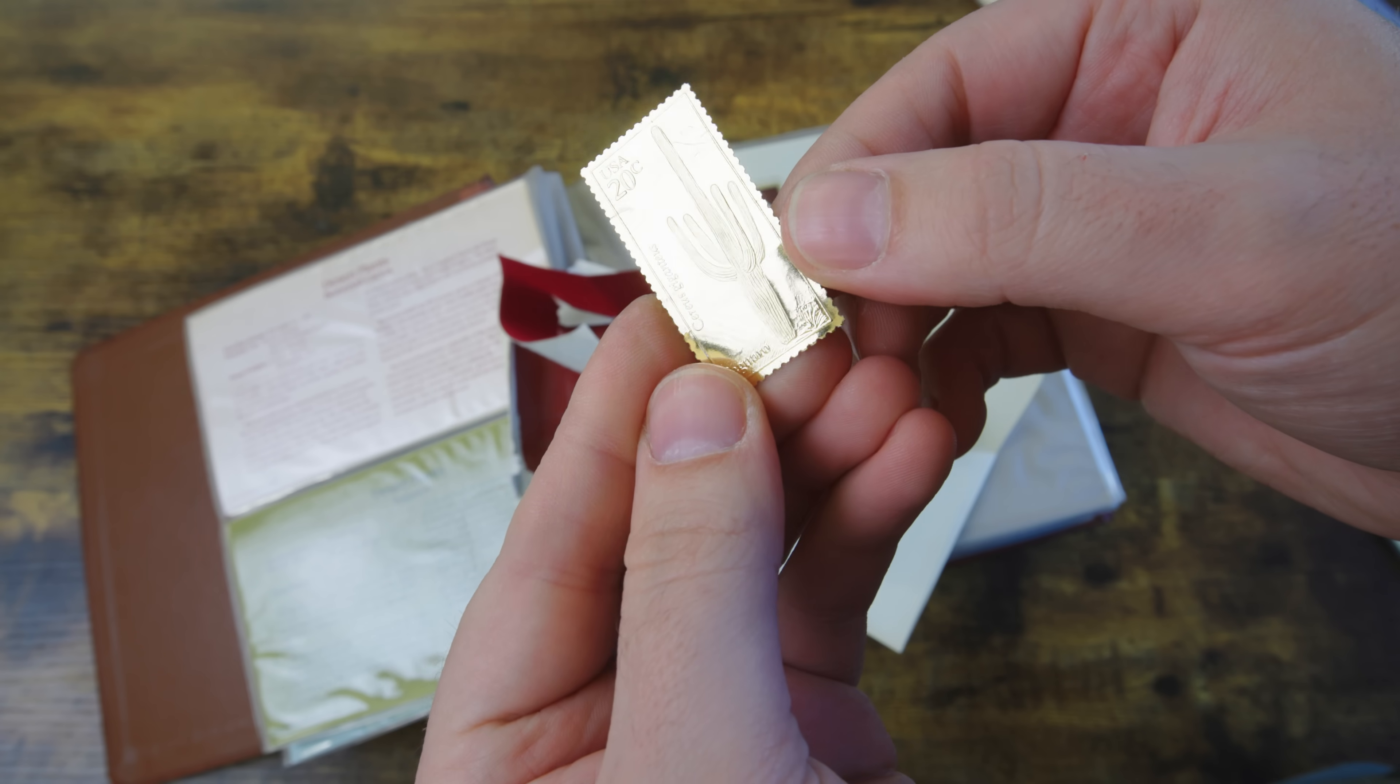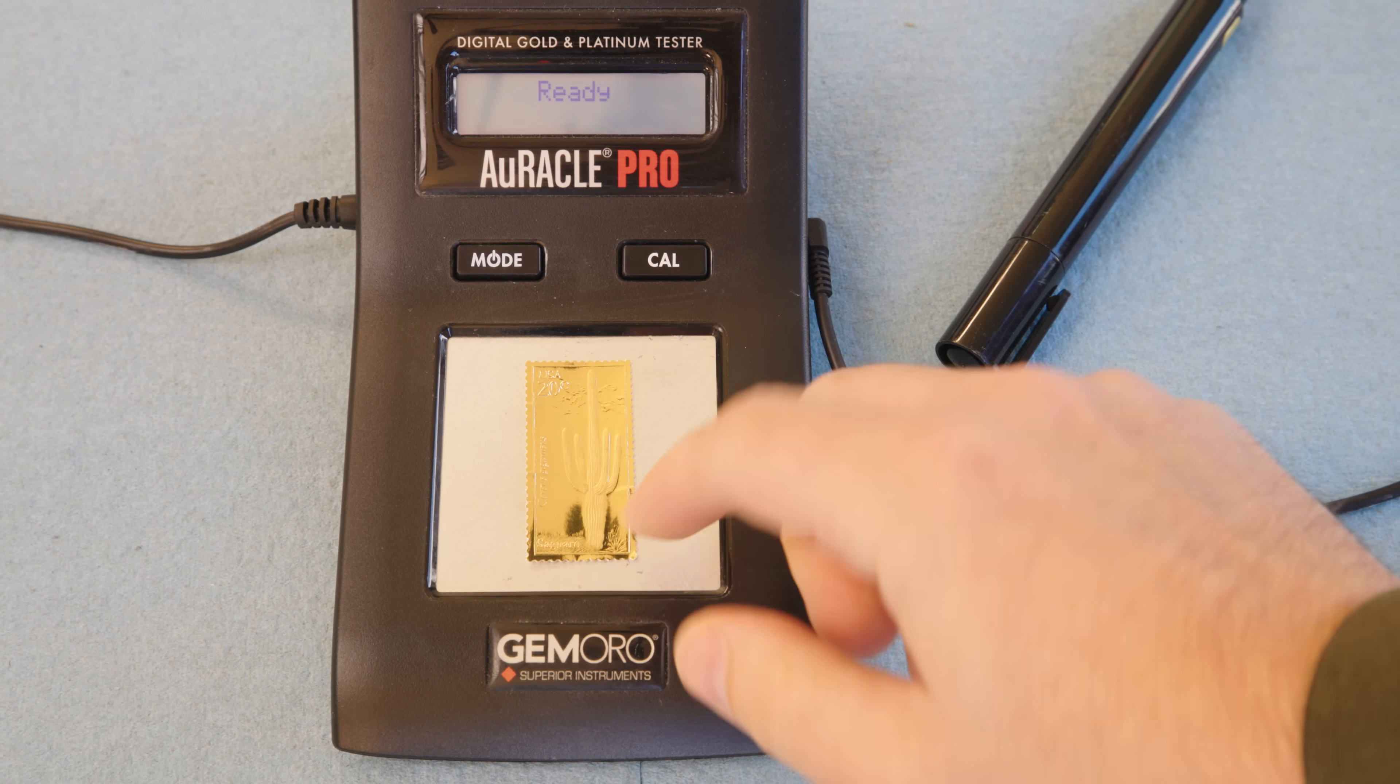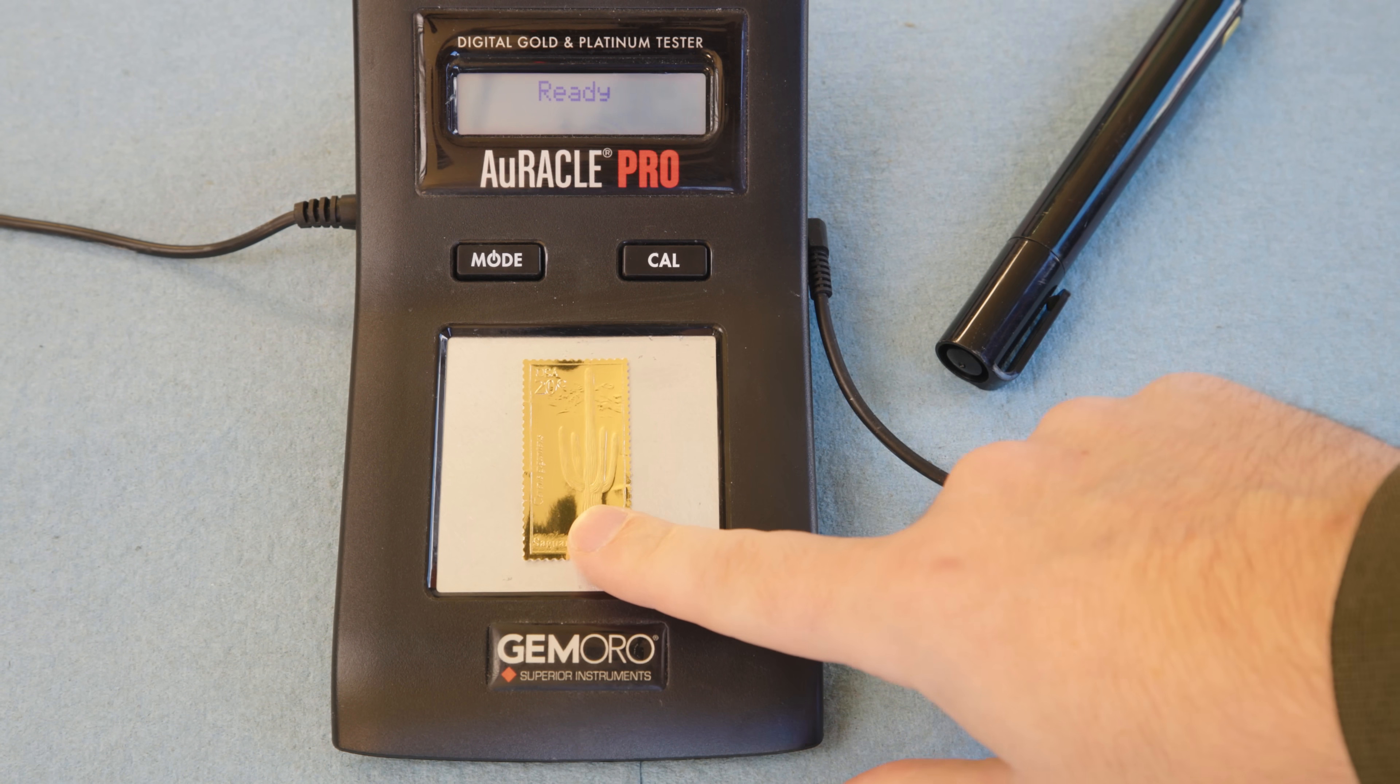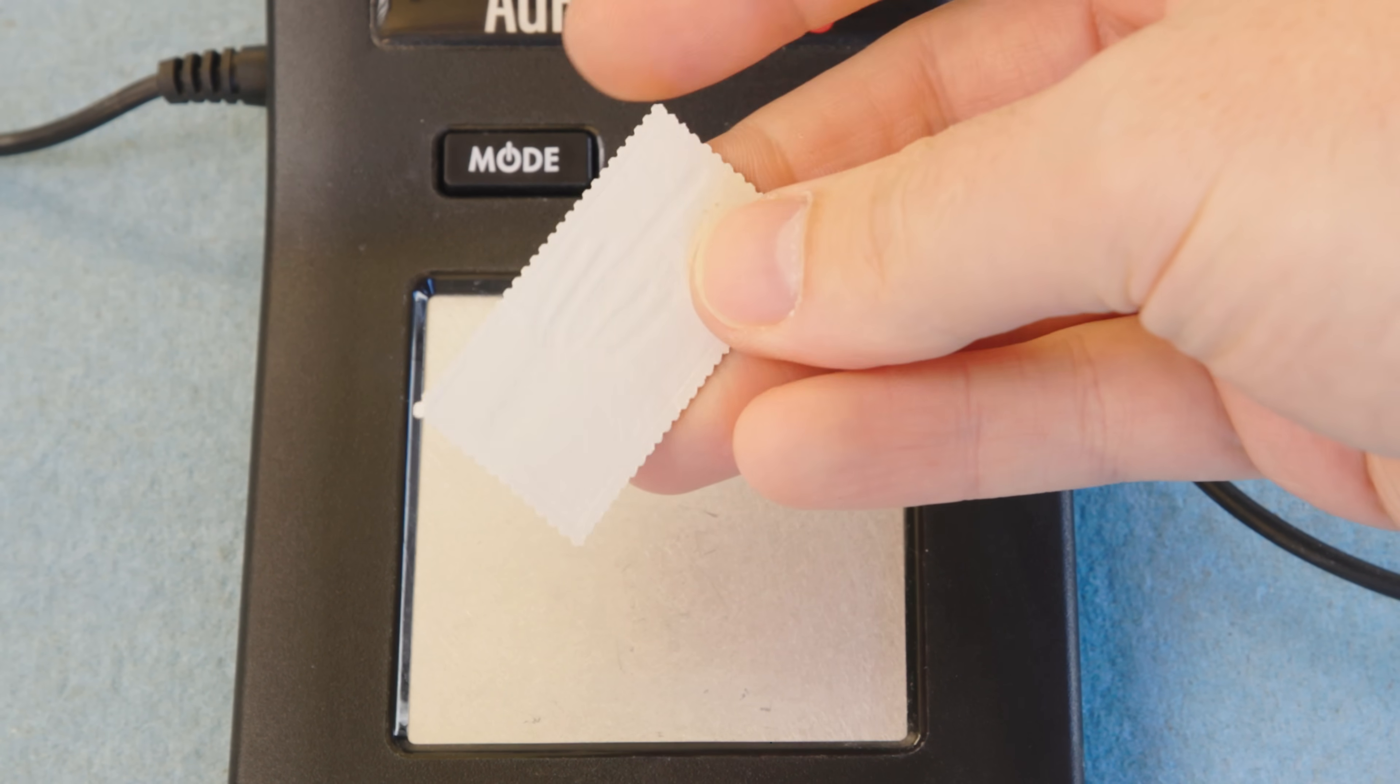Yeah these are actually super thin. Like as thin as real stamps basically. Now just for fun the first thing I wanted to do was to throw it on a gold testing machine to see if I can even get a reading, let alone 22 karat.